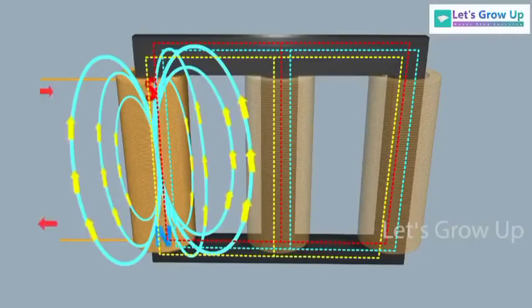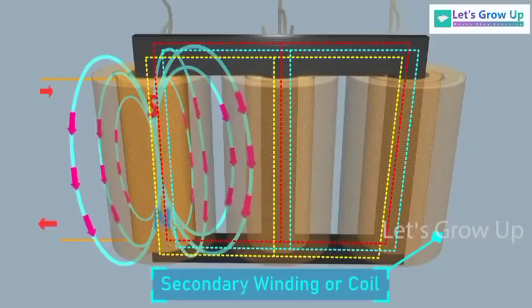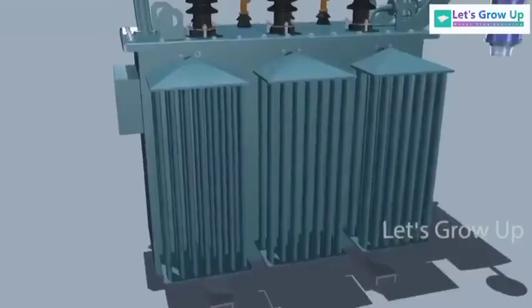As this flux is continually changing the amplitude and direction, there must be a changing flux linkage in the secondary winding or coil. According to Faraday's law of electromagnetic induction, there will be an EMF induced in the second winding. If the circuit of the secondary winding is closed, then a current will flow through it. This is the basic working principle of a transformer.